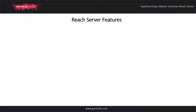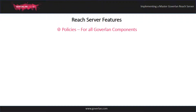The Goverland Reach Server, GRS for short, is a central authority for all Goverland services and has five primary features. The first is global policy distribution for granular control of all Goverland components, their behavior, and settings.